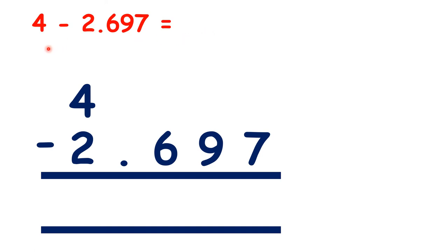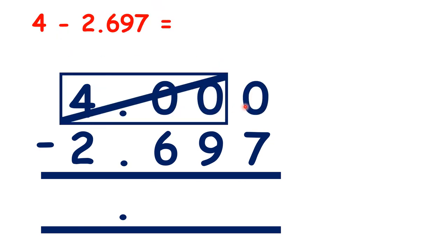So pause the video, and see if you can work out 4 minus 2.697. We copy down the decimal point, and then remember that 4 is the same as 4.000. So we have our place values lined up. Now here we're subtracting from 0, we can't use the next place value column along, and we can't even use the place value further along than that.